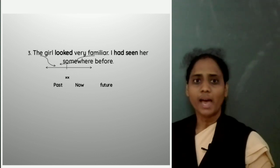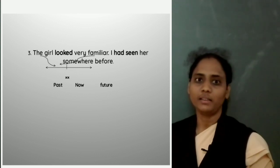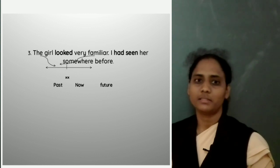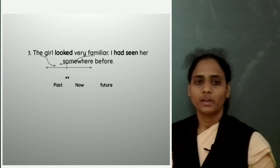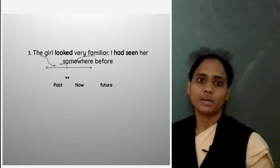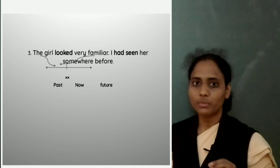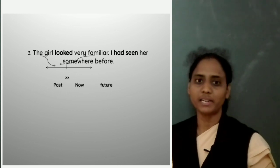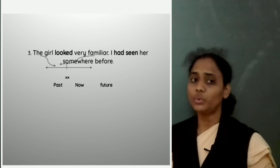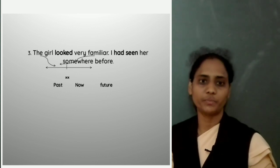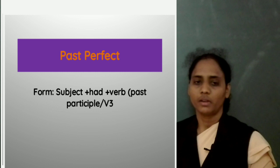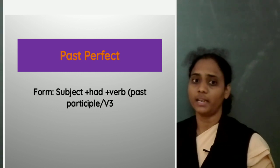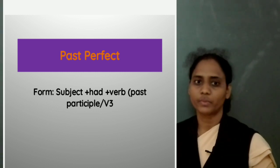As you can see, the past perfect tense is really very easy. Just remember that when we have two past actions, we use the past perfect if we want to clearly indicate which happened first. We do this to avoid confusion in the order of events.